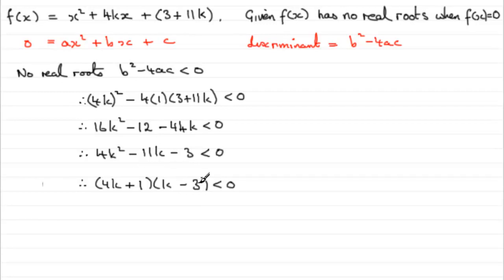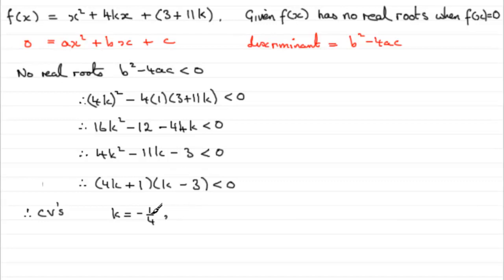Now, when we get to this part, we've got to solve this quadratic inequality. The critical values are going to be when each factor equals zero: 4k + 1 = 0 gives k = minus a quarter, and k − 3 = 0 gives k = 3. Don't fall for the trap of setting each factor less than zero separately — that would be totally wrong. Check my tutorials on solving quadratic inequalities if you're struggling with this.